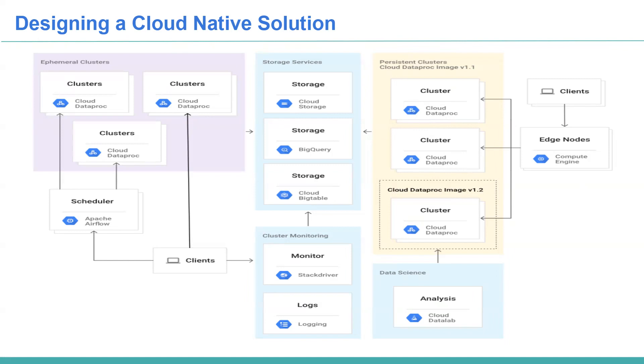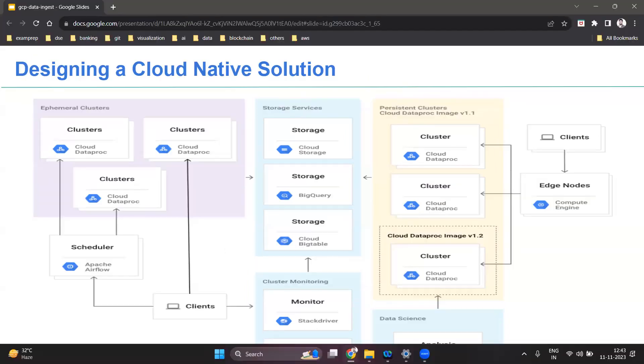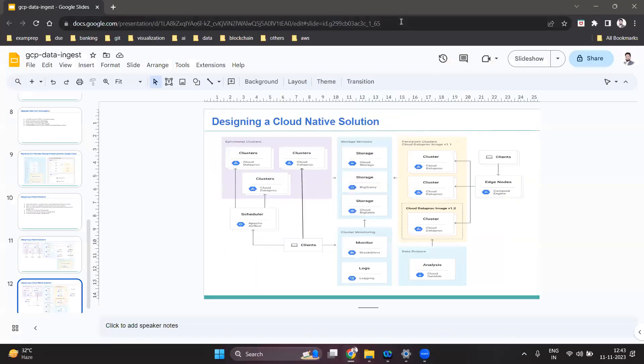So this is how Hadoop works on GCP. You can have a hybrid solution, a cloud-native solution, data in HDFS provided by Dataproc, or data in Google Cloud Storage or BigQuery. That's all we have for Hadoop on Google Cloud Platform. Thank you.